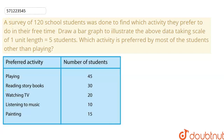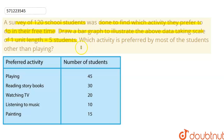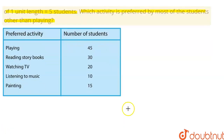Hello everyone. Today we are going to discuss one more question on data handling. In this question, we are given a survey of 120 school students. This survey was done to find which activity the school students prefer to do the most in their free time. From this data, we need to draw a bar graph to illustrate the above data, taking a scale where one unit length equals five students. Then, from the bar graph, we need to answer which activity is preferred the most by students other than playing.